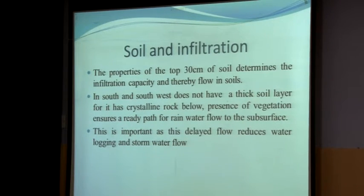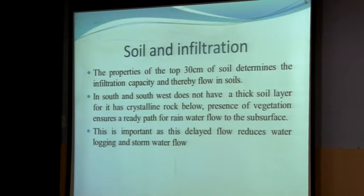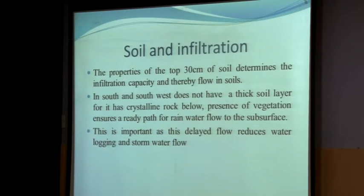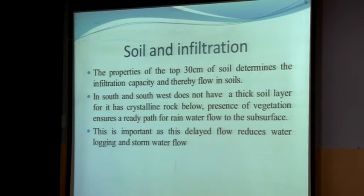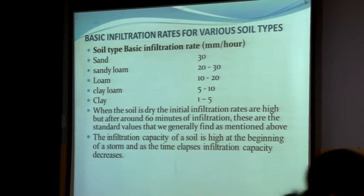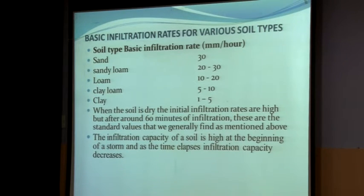Ideally, infiltration really happens depending on the quality of the soil in the top 30 cm. Unfortunately, in south and southwest Delhi we are very close to the ridge and therefore we do not have a very thick soil cover — barely 30 cm or at best 50 cm, with crystalline rock below. We have to really take care of vegetation so that we have this rainwater flow that leads to delayed flow and reduced storm water flow. Typical infiltration rates: sand has the highest at 30 mm per hour, while clay is barely 1 to 5 mm per hour.